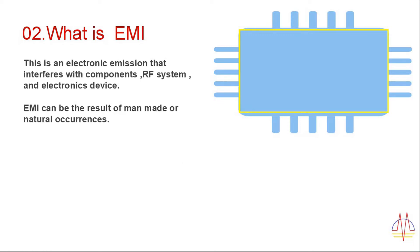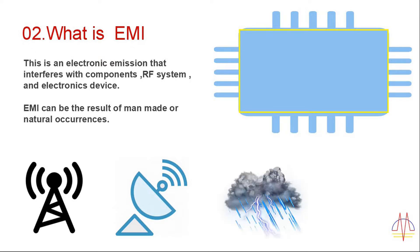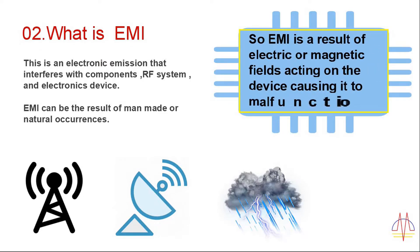EMI might be electrical noise or radiation noise, which is emitted by different kinds of sources. EMI is a kind of electronic emission that interferes with components of your device, RF systems, and electronic devices. EMI can be the result of man-made or natural occurrences — for example, a cell phone tower or TV signal dish will emit radiation, and even natural occurrences like lightning surges can generate electronic signals. EMI is a result of electric or magnetic fields acting on a device, causing it to malfunction.